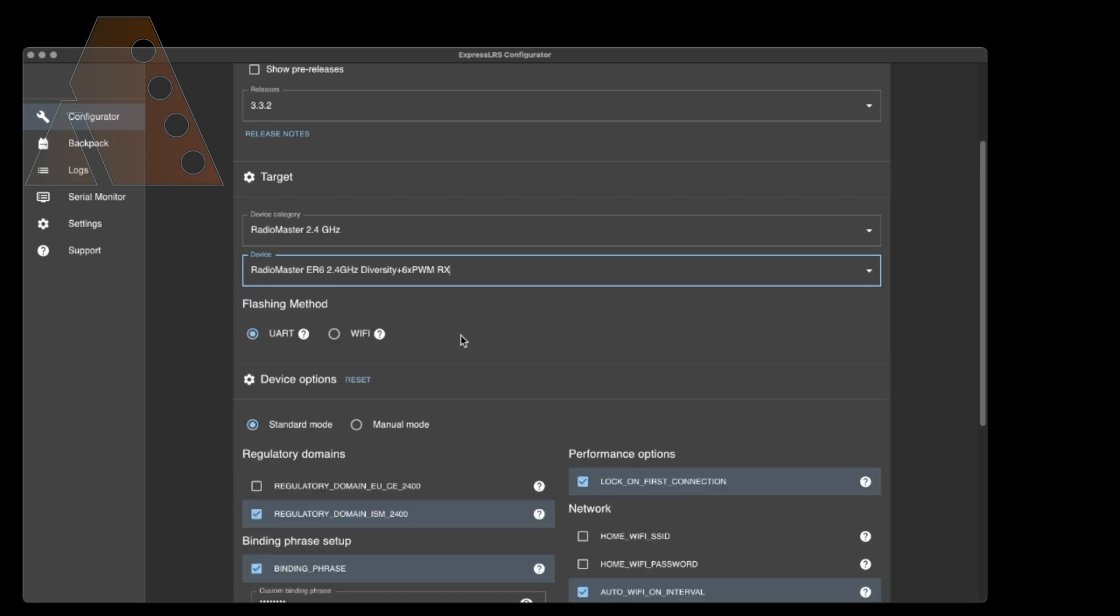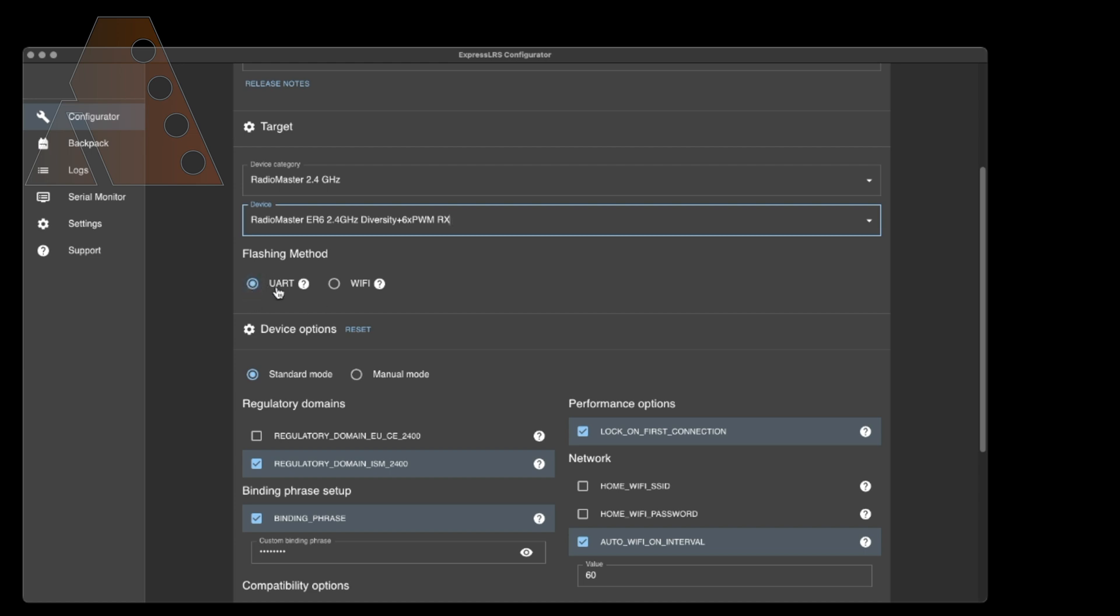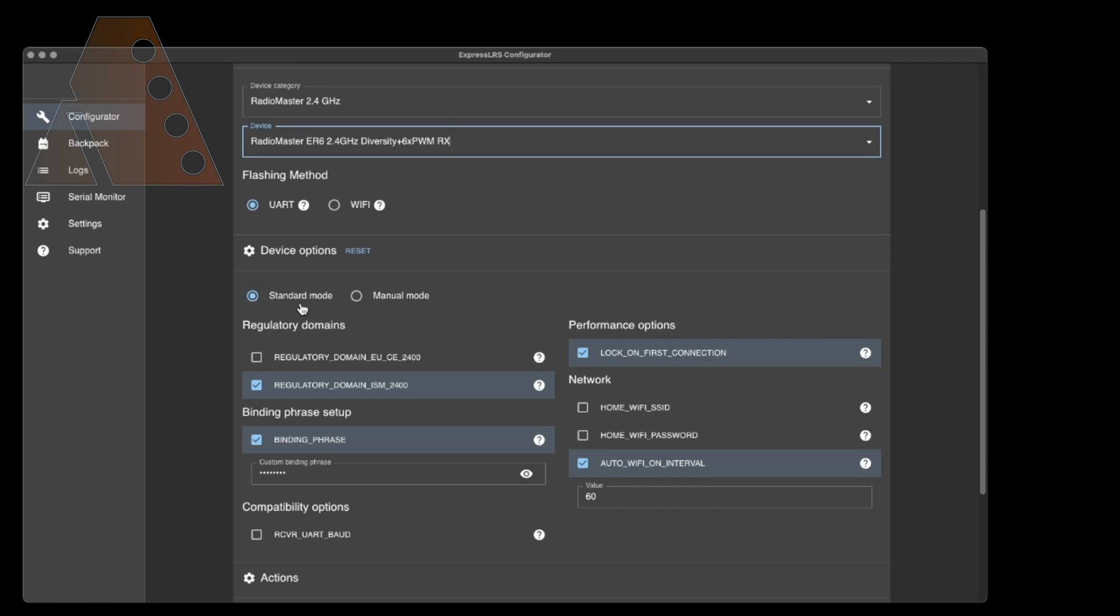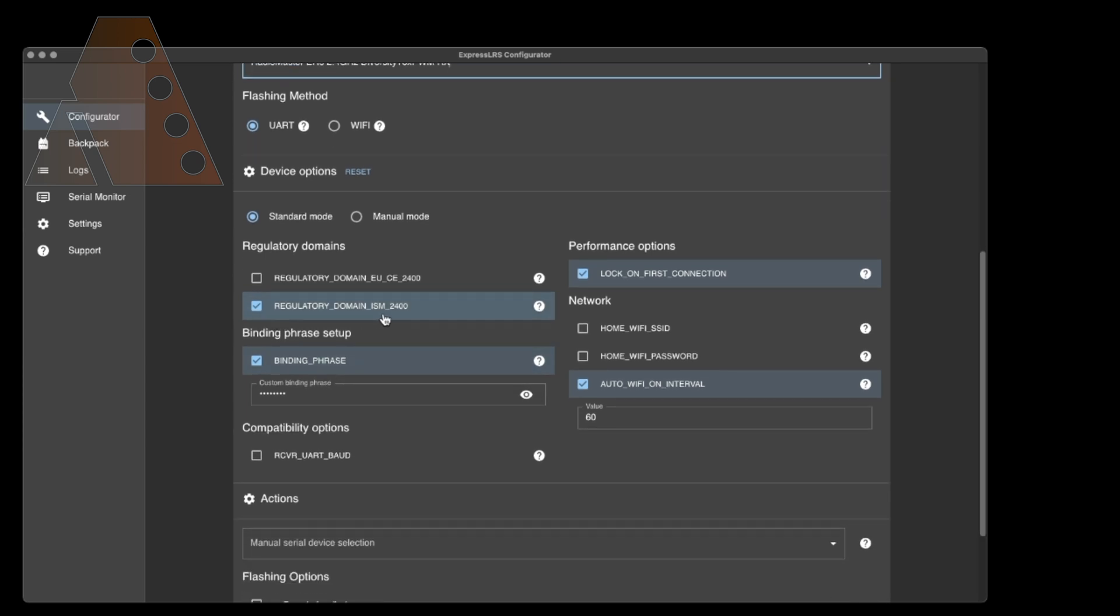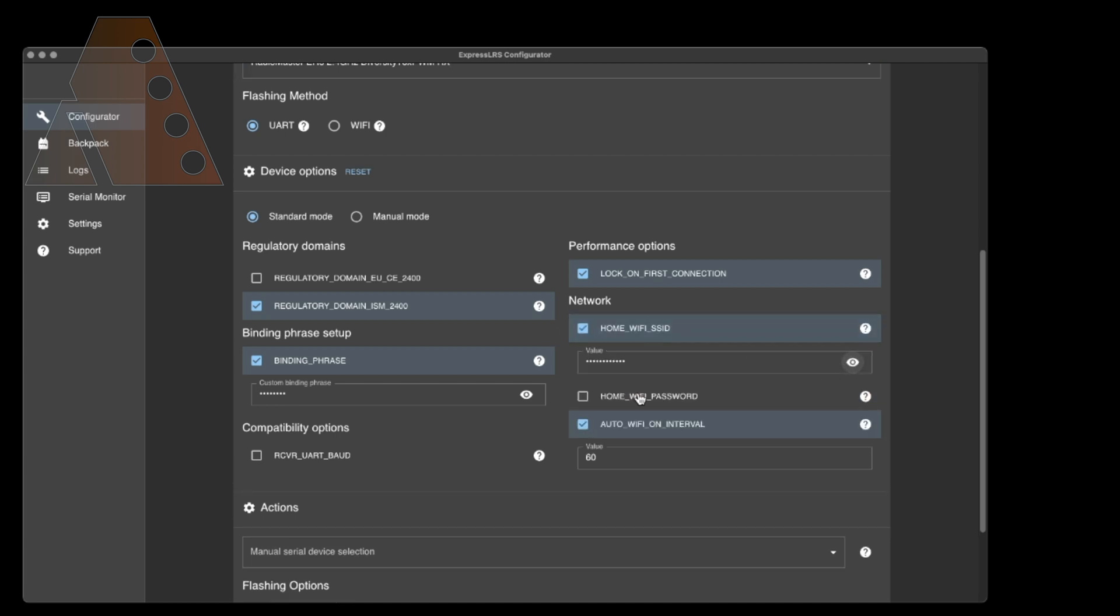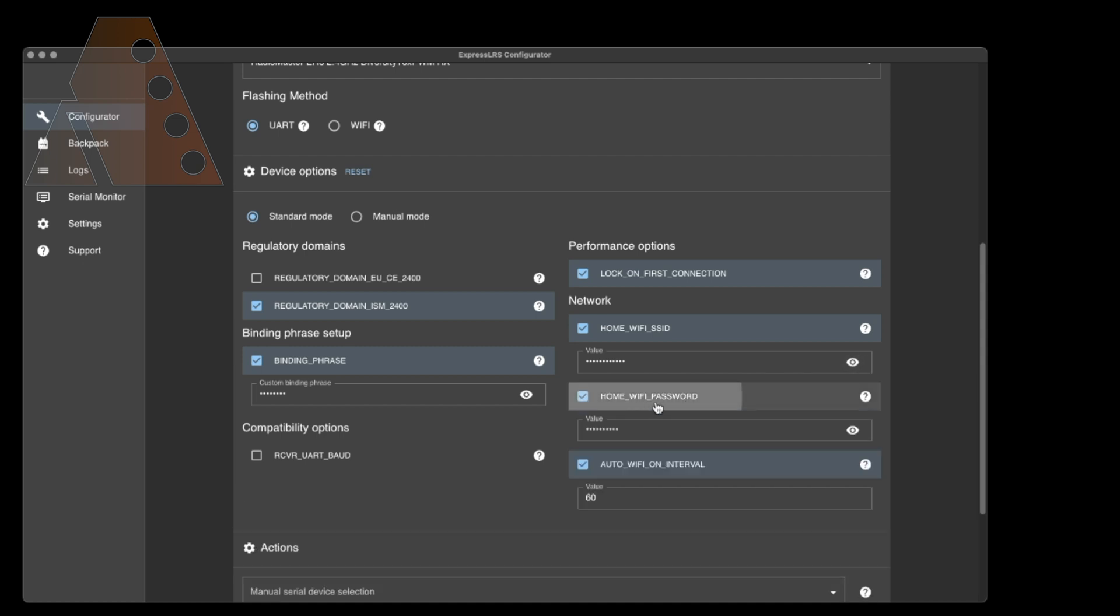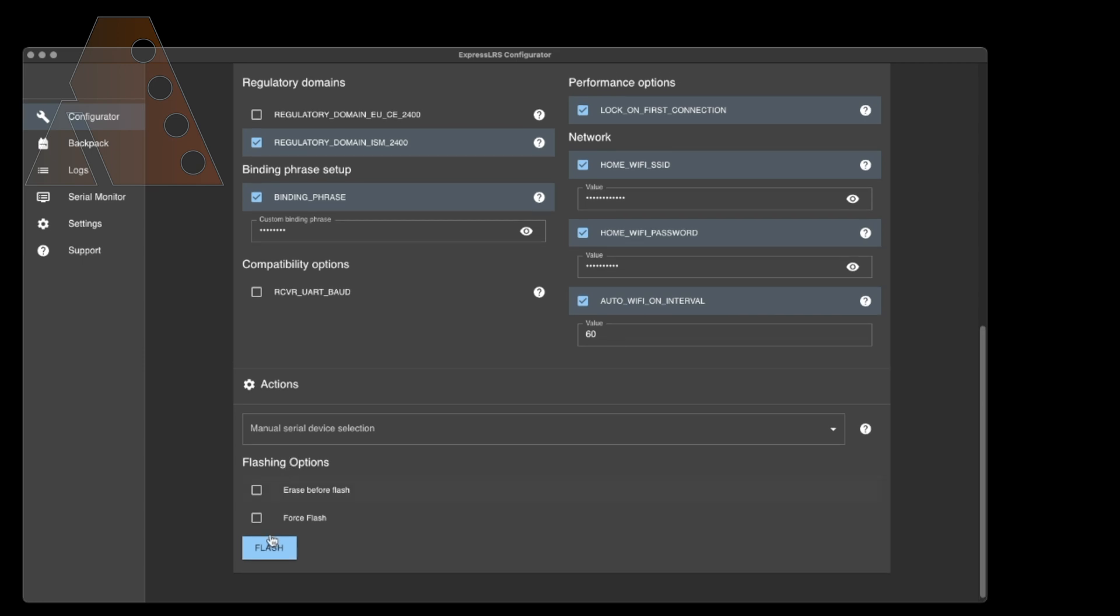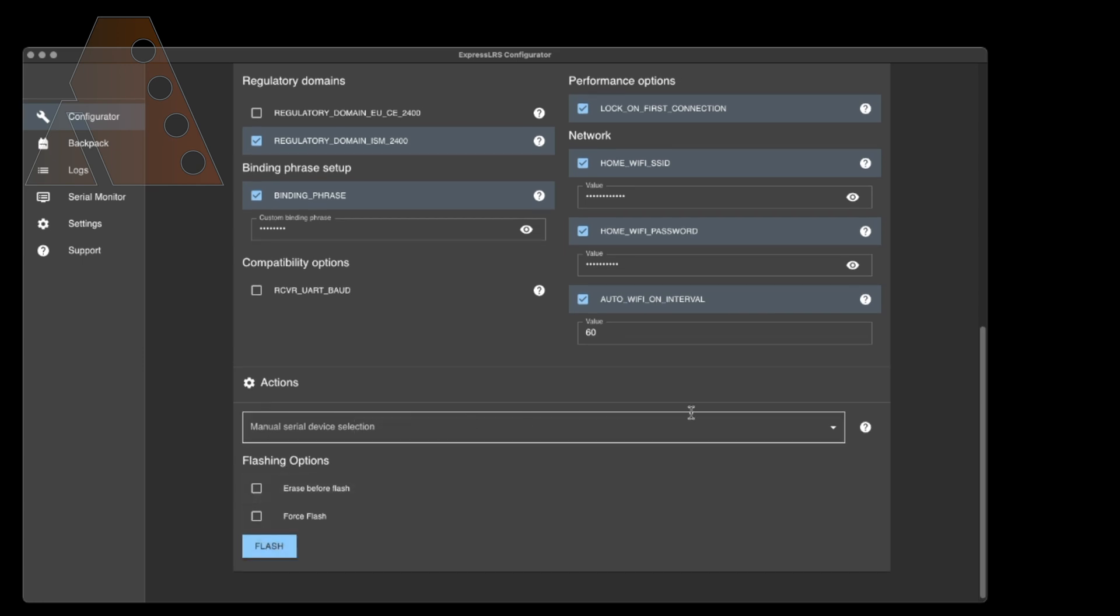And now we have that. Our flashing method is going to be UART. Device options - we're not going to worry about anything here, standard mode or manual, we're just going to use standard. Our regulatory domain is ISM 2400. My binding phrase is actually still populated from the binding phrase that I used to flash the internal module in my radio. And then our WiFi, we're going to set that up - WiFi SSID, which is already set. You can just click on the little eyeball to make sure that you have it correct.